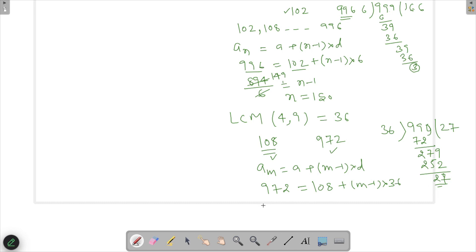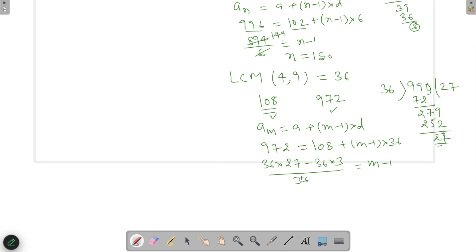Now 972, if I just do this calculation again, then this will be 972 was nothing but 36 into 27, and then this is nothing but 36 into 3. And if I divide it by 36, I'll get my M minus 1. So in this case 36 will cancel out, so I'll get 24 here, so M will be 24 plus 1, which is 25.